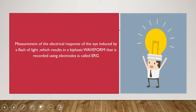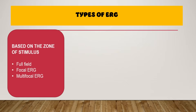ERG is the measurement of the electrical response of the eye induced by a flash of light. As you give a flash of light to the eye, there will be an electrical response that results in a waveform generation. That waveform is basically a biphasic waveform, and to record it you need an electrode — therefore this entire process is called Electroretinography.